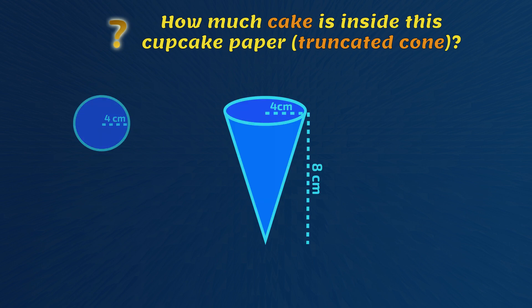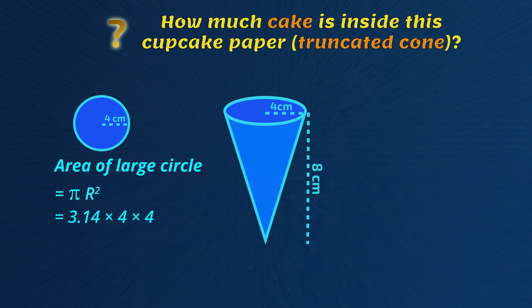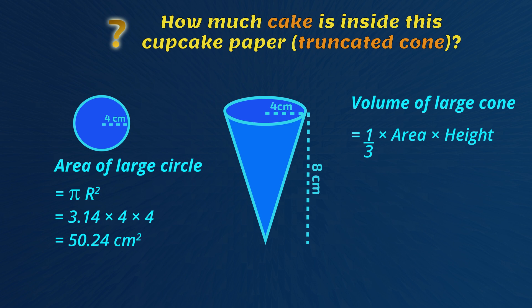First, we work out the volume of the large cone. The area of the circle is pi r squared. So in the large cone, that's 3.14 times 4 times 4, which is 50.24 square centimeters. Now the volume of the large cone is one-third times that area of 50.24 times by the height of the large cone of 8. So the volume of the large cone is 133.97 cubic centimeters.